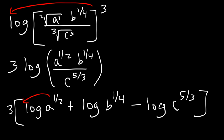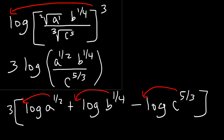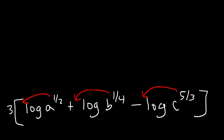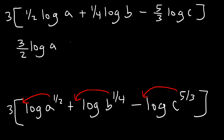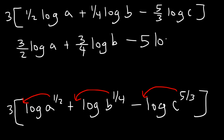Now let's move the exponents to the front. So we're going to have 3 times one-half log a plus one-fourth log b minus 5 over 3 log c. Now the last thing we need to do is distribute the 3: it's 3 over 2 log a plus 3 over 4 log b minus 5 over 3 times 3. The 3s will cancel, so it's simply minus 5 log c. And so this is the final answer.